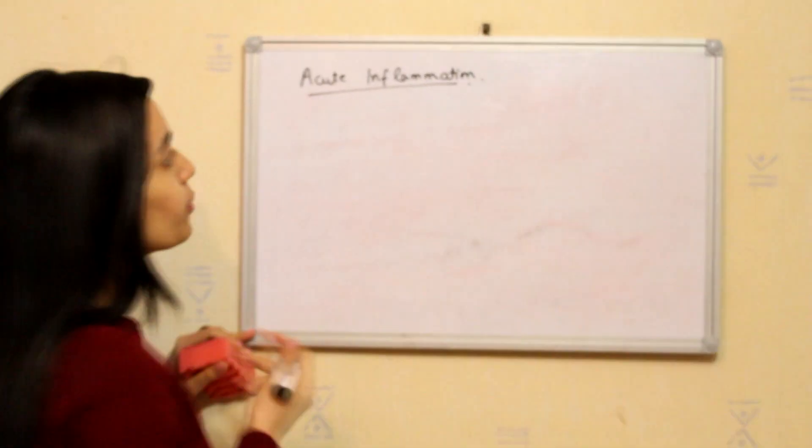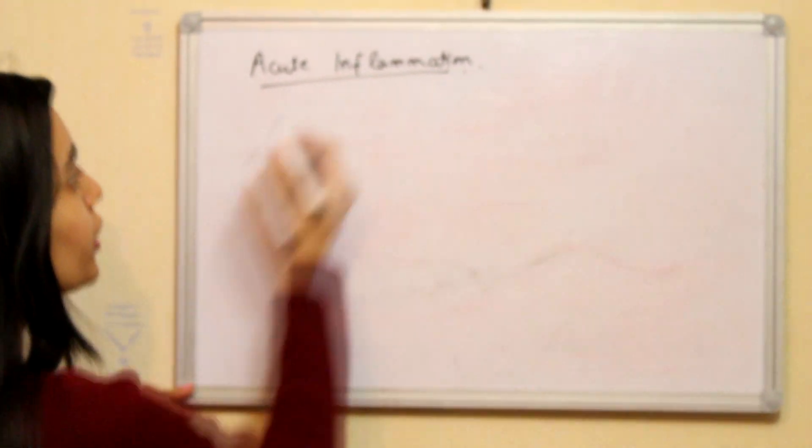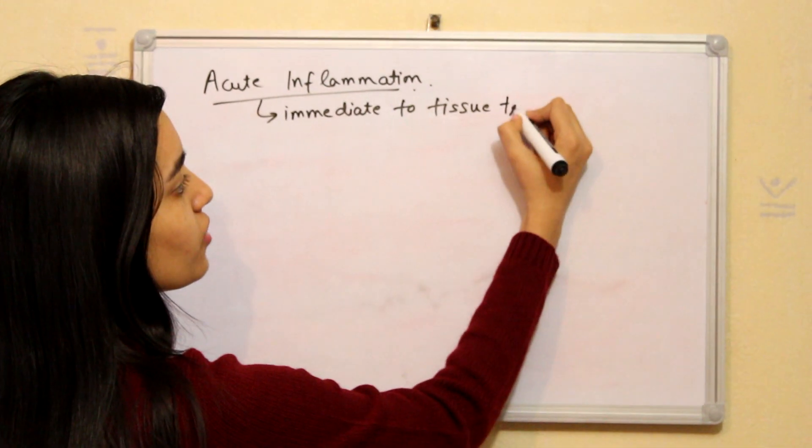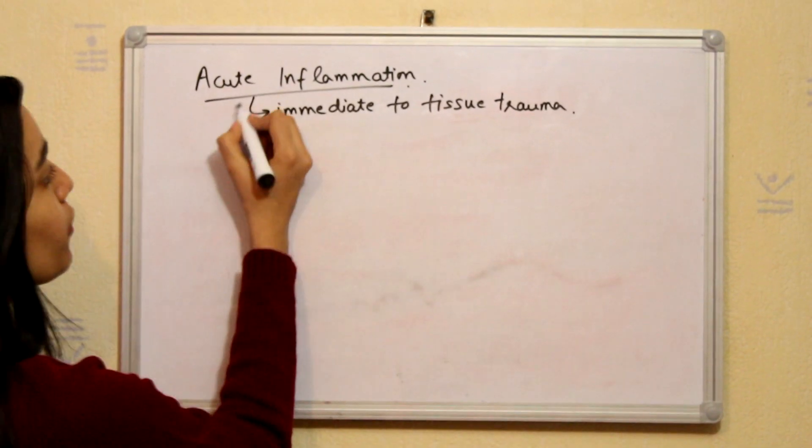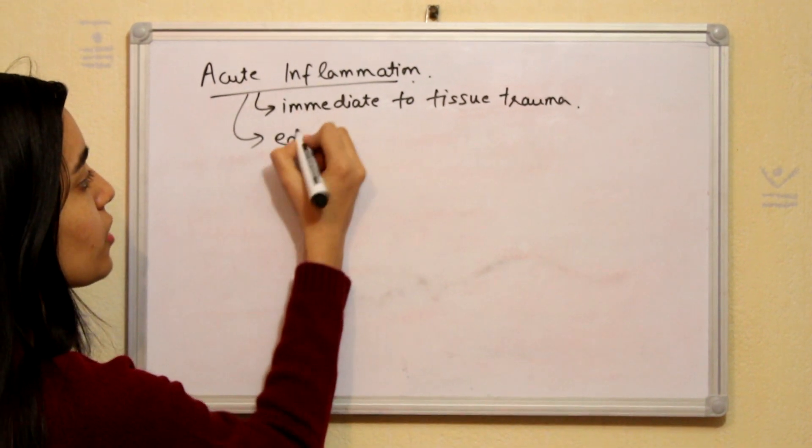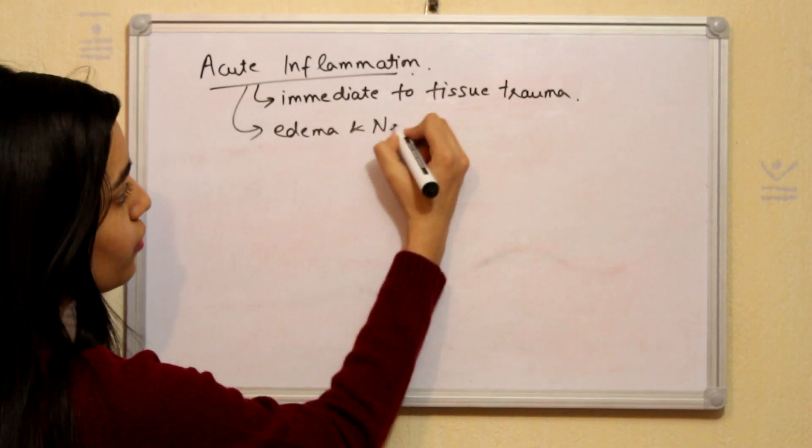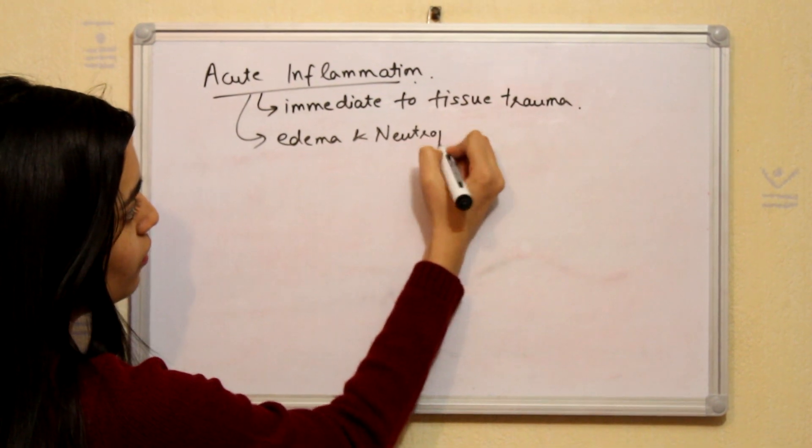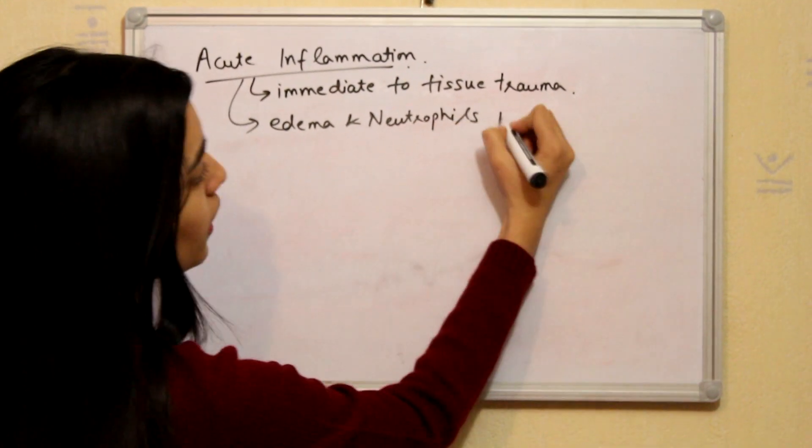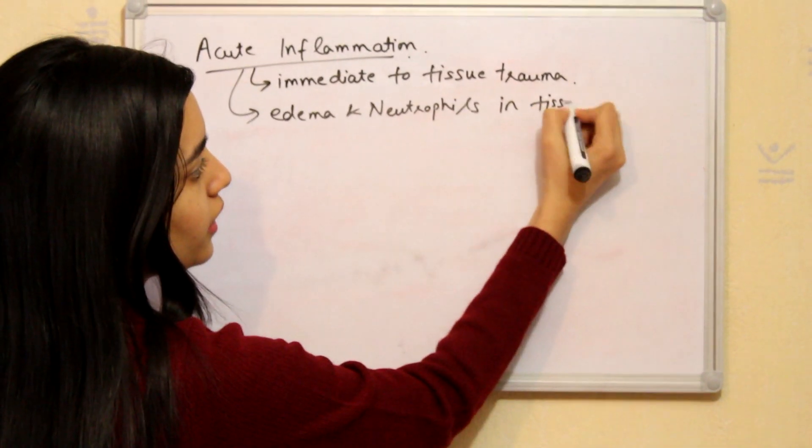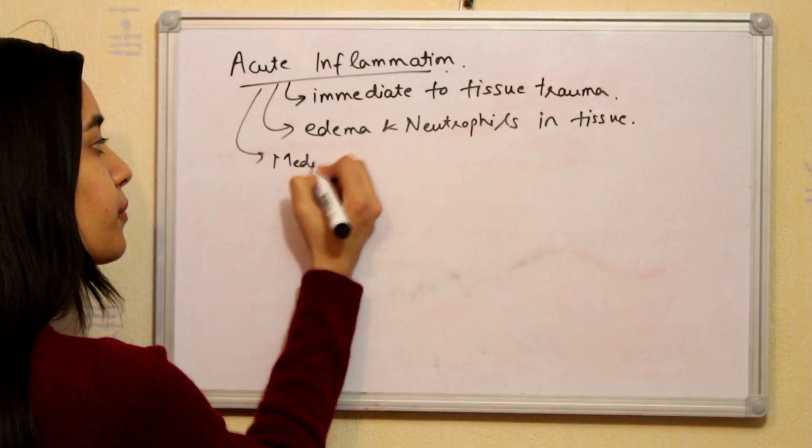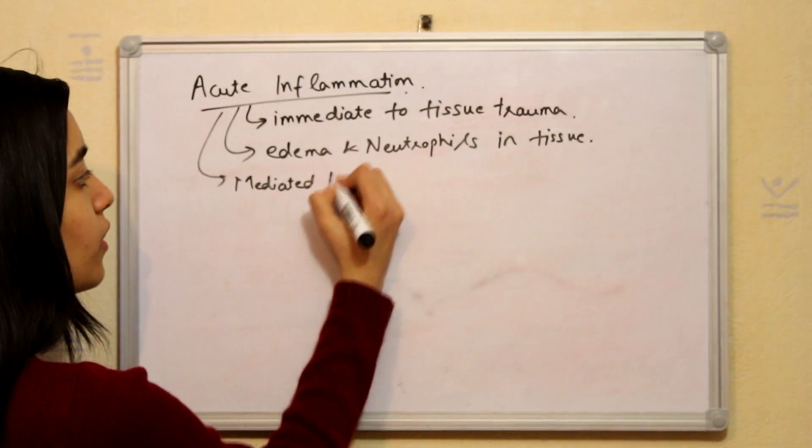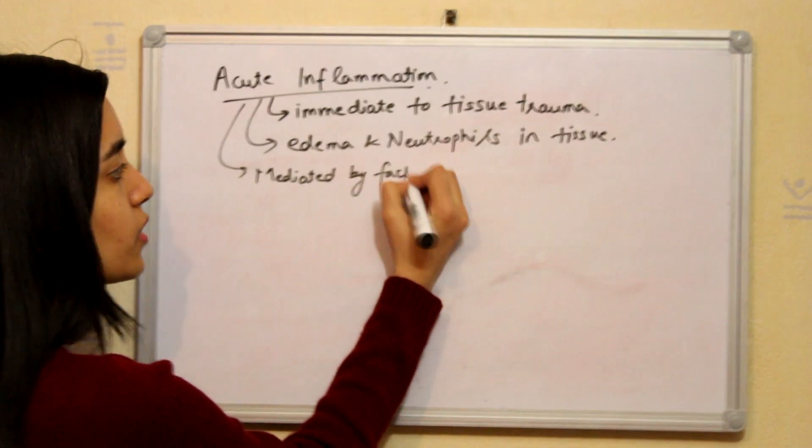Now what is acute inflammation? Acute inflammation is the immediate response to any injury to the tissue and the basic character of acute inflammation is the presence of edema and neutrophils in the tissue. And acute inflammation is mediated by several factors which we will discuss one by one now.